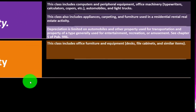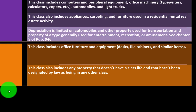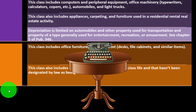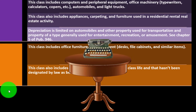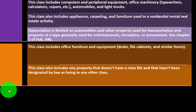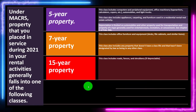Seven-year property includes office furniture and equipment — desks, file cabinets, and similar items. So the typewriter is five-year property, and the desk it sits on is seven-year. This class also includes any property that doesn't have a class life and hasn't been designated by law as being in any other class — it's the default catch-all class. Then there's 15-year property.